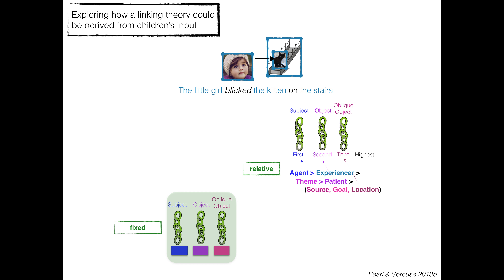If you have a relative representation, you are mapping whatever roles are present to a first, second, or potentially third highest role on the basis of this hierarchy, and then linking those to subject, object, or oblique object from highest to lowest. You again have three set links, and the theory is this collection of three links under the relative representation. That is what you're trying to learn.